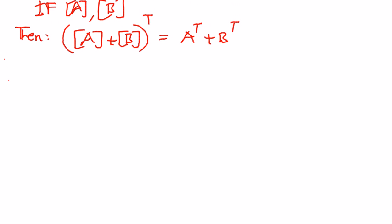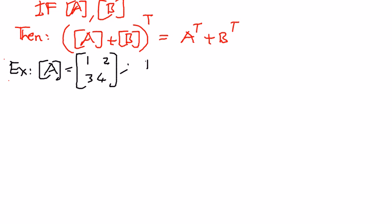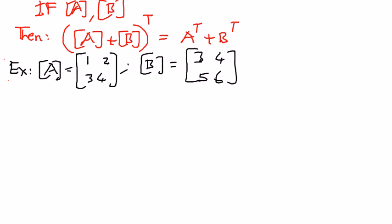Let us understand this with a simple example. If A is a matrix with elements 1, 2, 3, 4, and if B is another matrix with elements 3, 4, 5, and 6, then we want to find the left-hand side: matrix A plus matrix B, transposed.